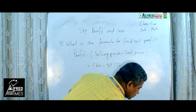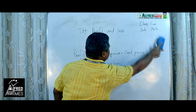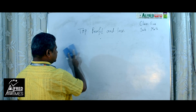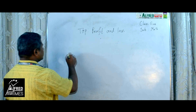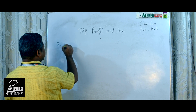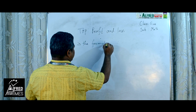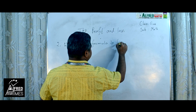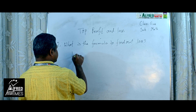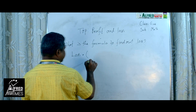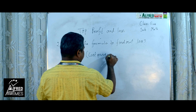Now we go to the next topic: Loss. Number 2, question number 1: what is the formula to find out Loss? Loss equals cost price minus selling price.